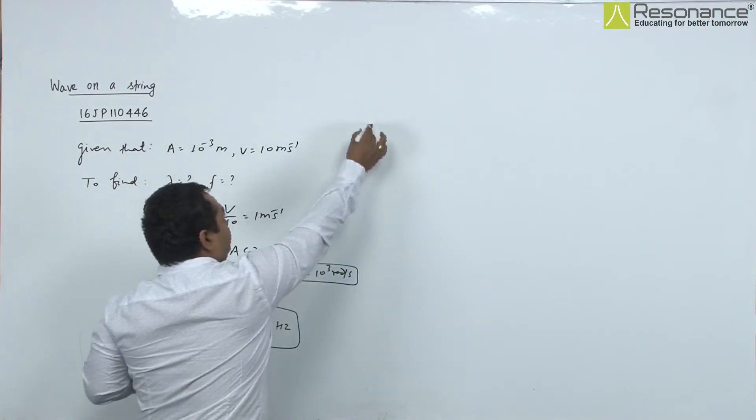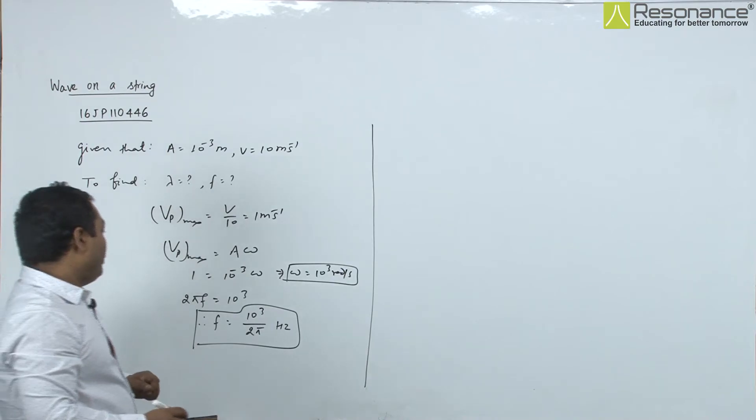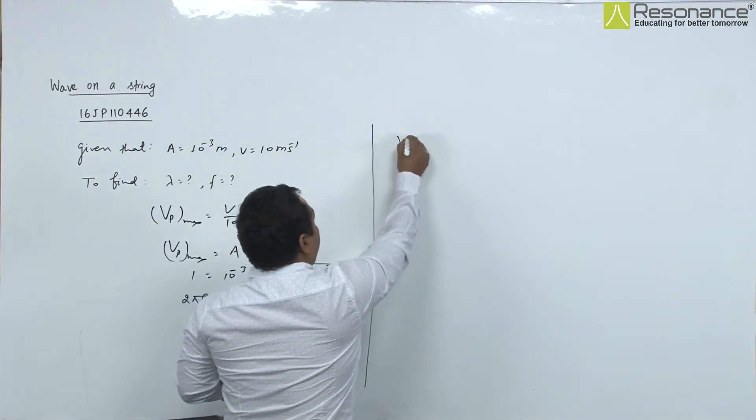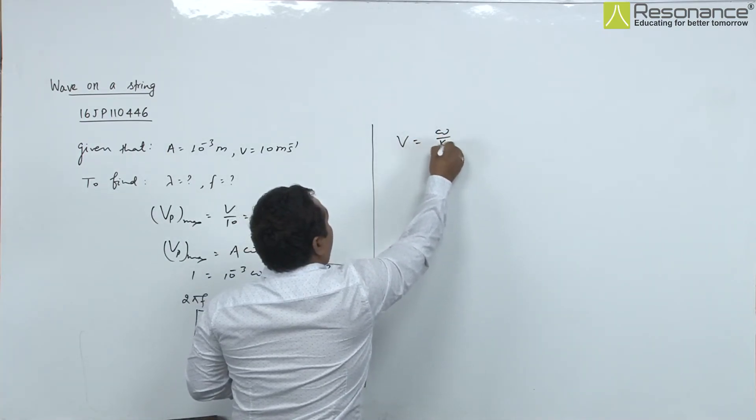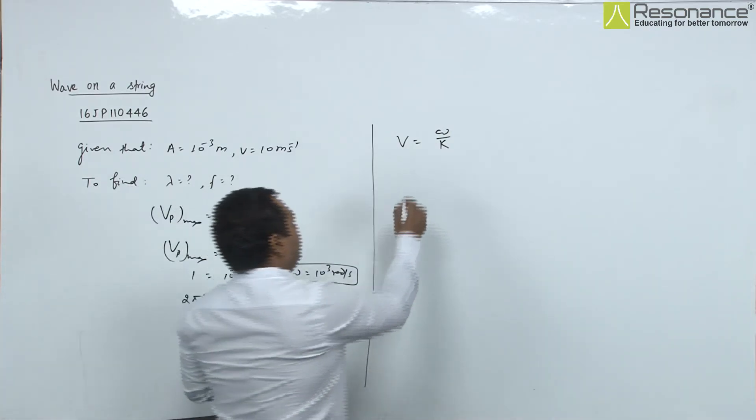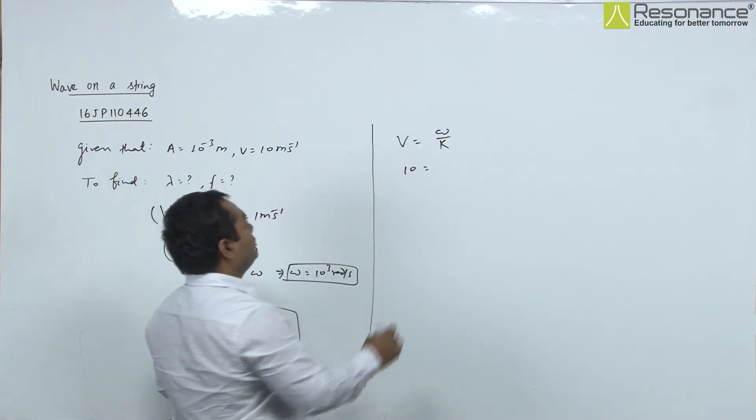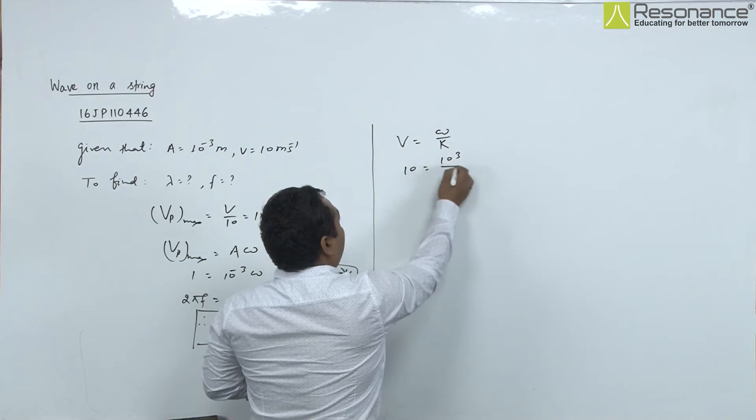Next, we need to find lambda. We know wave velocity V equals omega / k. V is given as 10, and omega is 10^3, so we have 10 equals 10^3 / k.